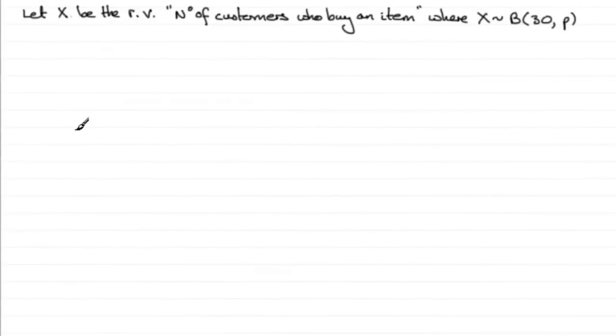Before we start, you'll notice I have defined a random variable X. Let X be the random variable number of customers who buy an item, and I've said that X is distributed binomially.